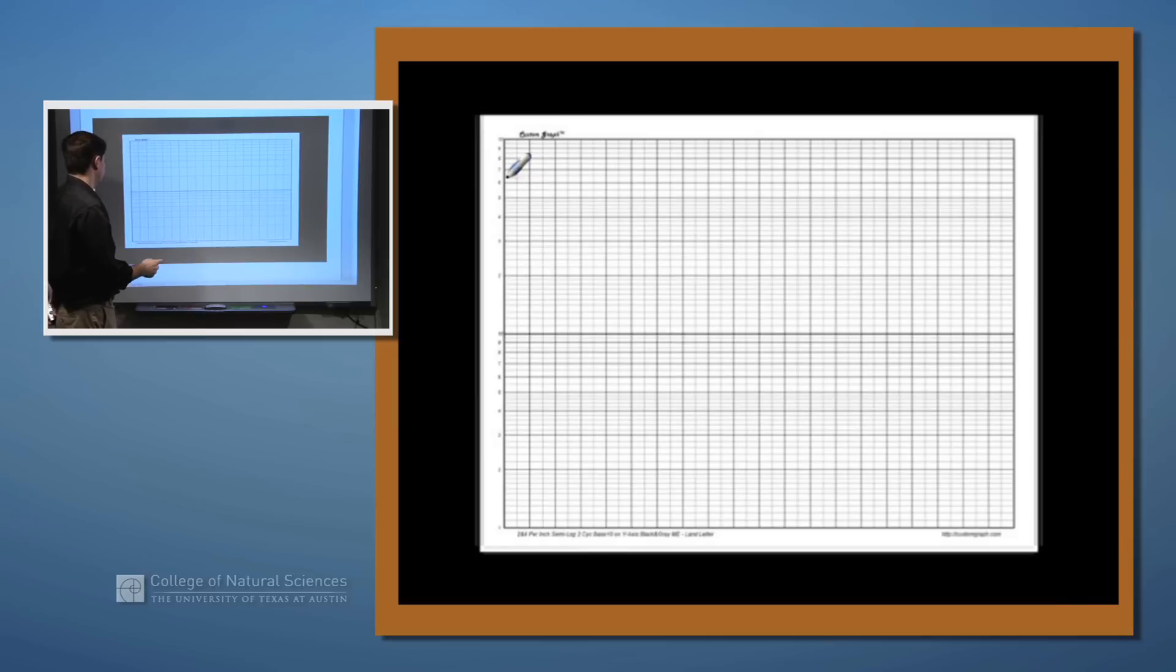And if we actually look at two full cycles we'll see that we start at 1, 2, 3, 4, 5, 6, 7, 8, 9, 10, and then we start again here renumbering at 20.